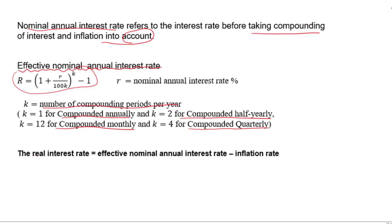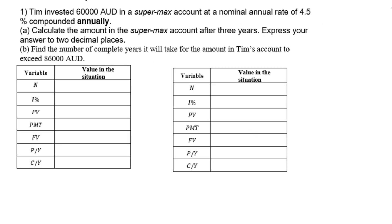The real interest rate equals the effective annual interest rate minus the inflation rate. Let's go to Example 1. Timo invested $60,000 Australian dollars in a Supermax account at a nominal annual rate of 4.5% compounded annually. Calculate the amount in the account after 3 years, expressed to two decimal places.